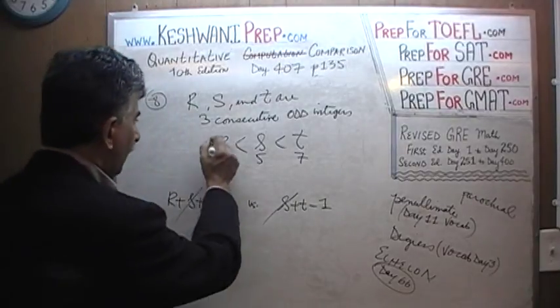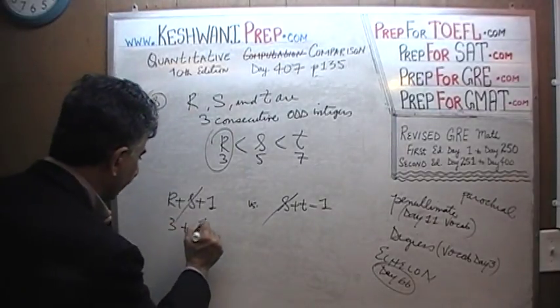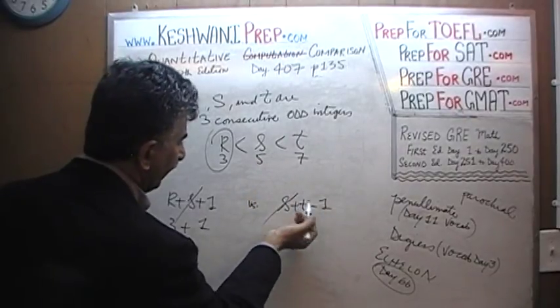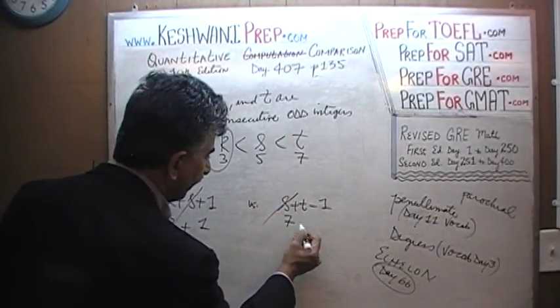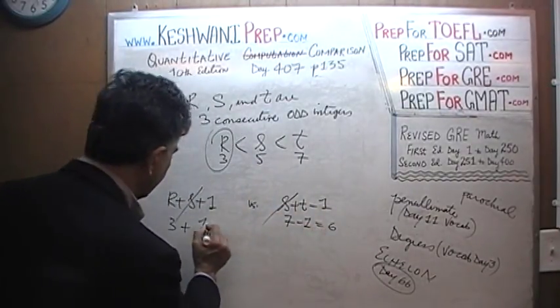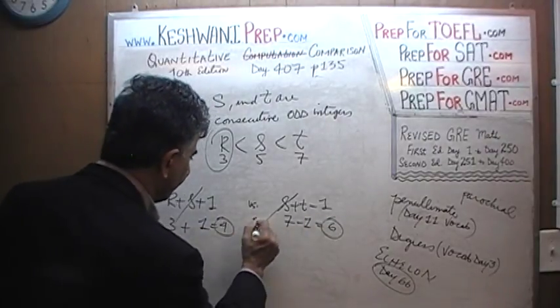And now we can go ahead and do it. R is equal to 3 plus 1. 3 plus 1 is 4. And S is gone. T is 7, 7 minus 1 is 6. And this was 4. 4 versus 6. The answer is B.